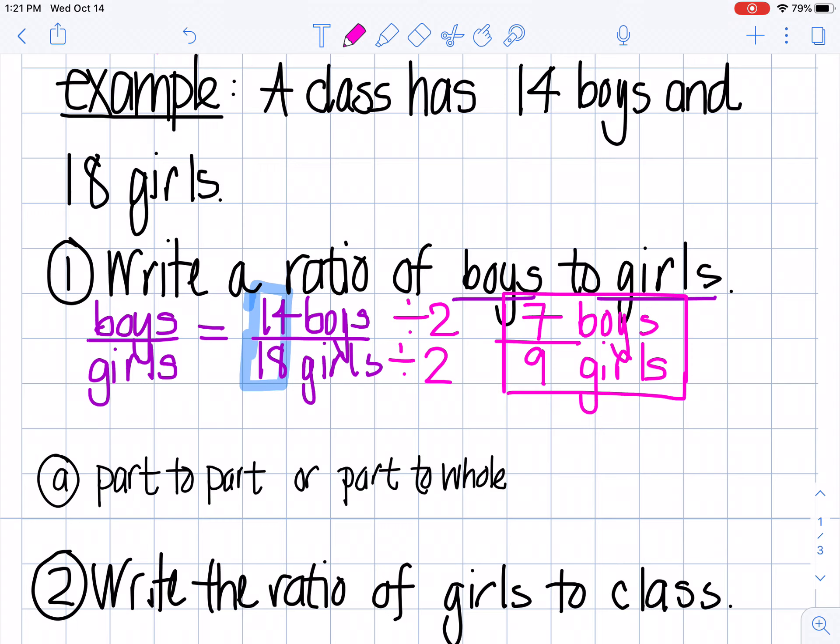So my final answer is 7 boys to 9 girls is my ratio of boys to girls. And I want to know, is this a part-to-part ratio or a part-to-whole ratio? So if I look at my example, my class would represent my whole number. It's the total things that I'm comparing.